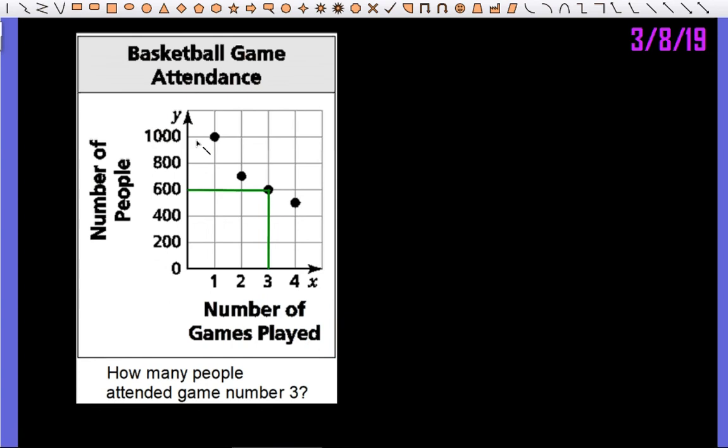Anytime you make a prediction like that, it will give you different choices that you can pick from, and so it's just asking, you know, what would be the most reasonable answer. For this one, however, it says exactly how many were at game number three, and so you can say 600.